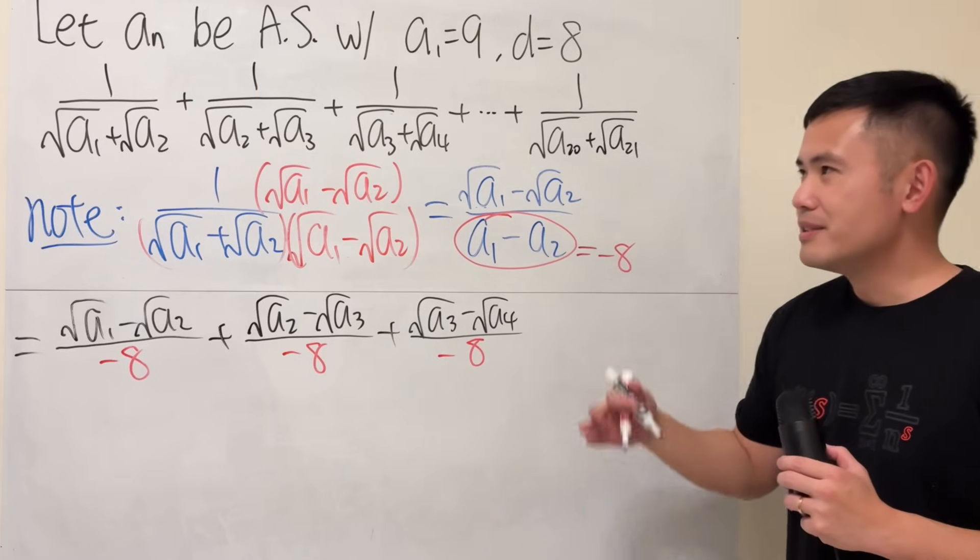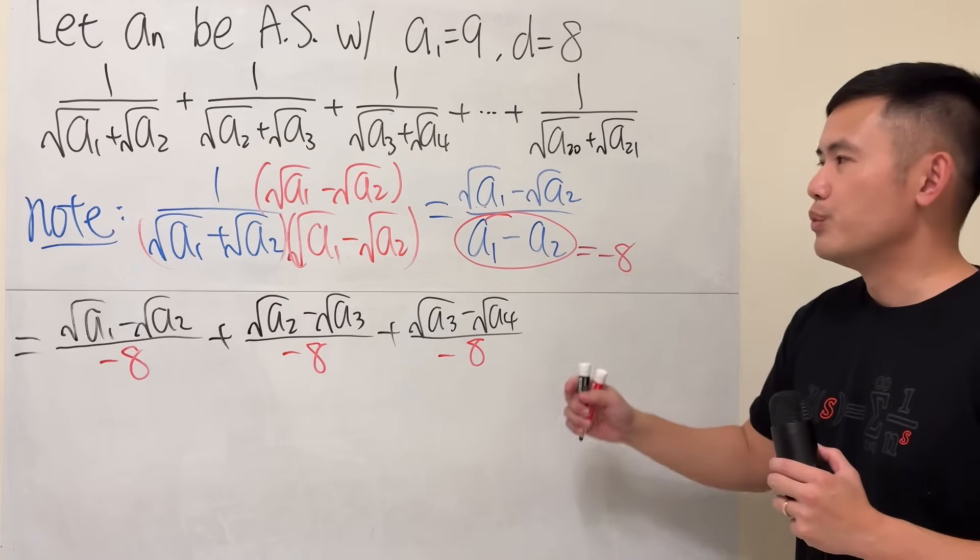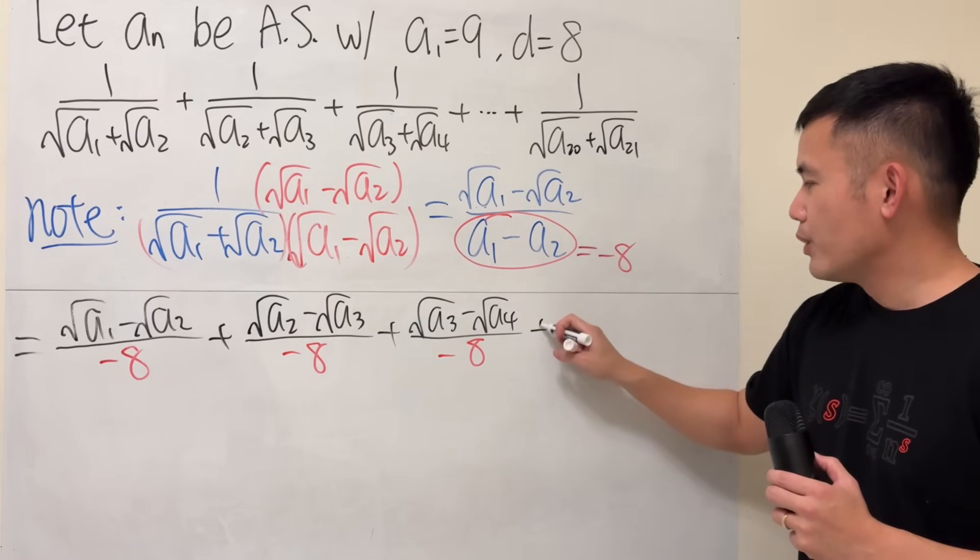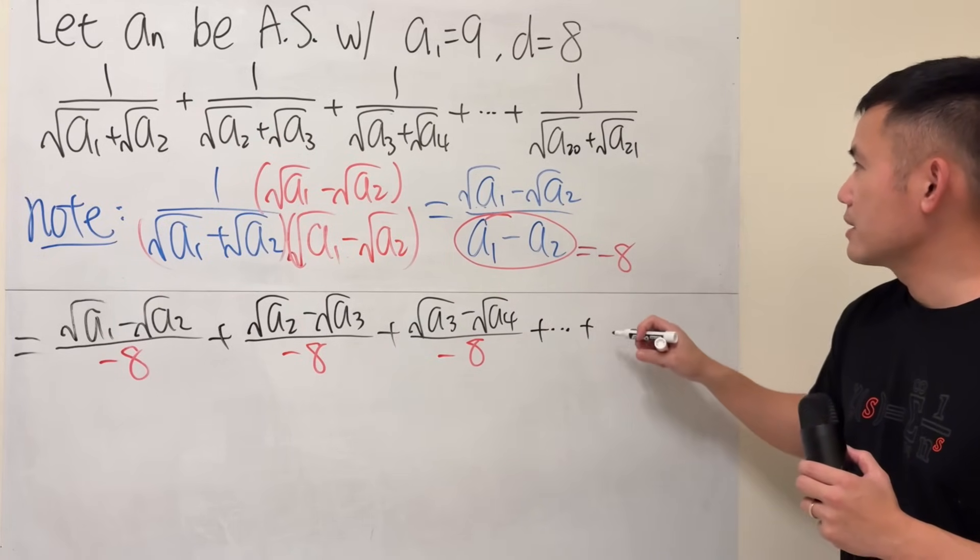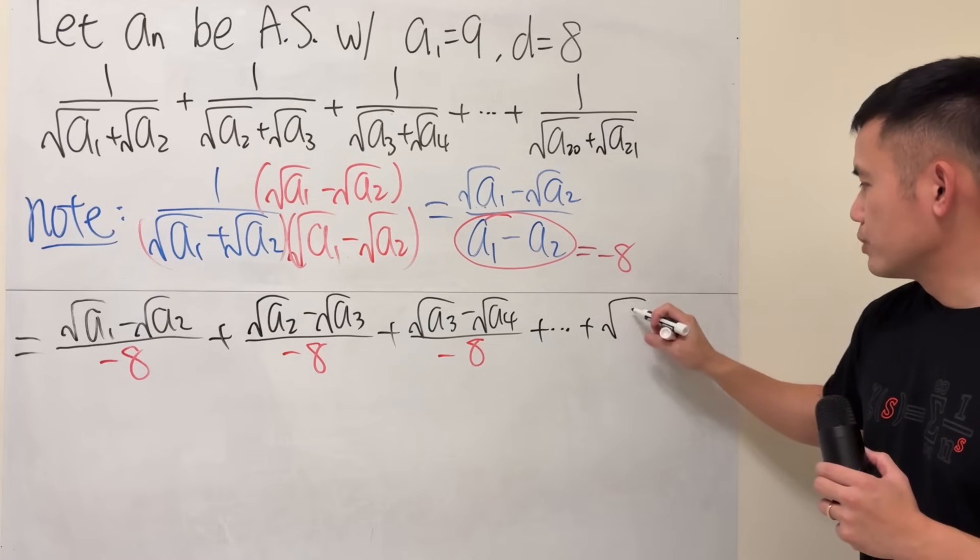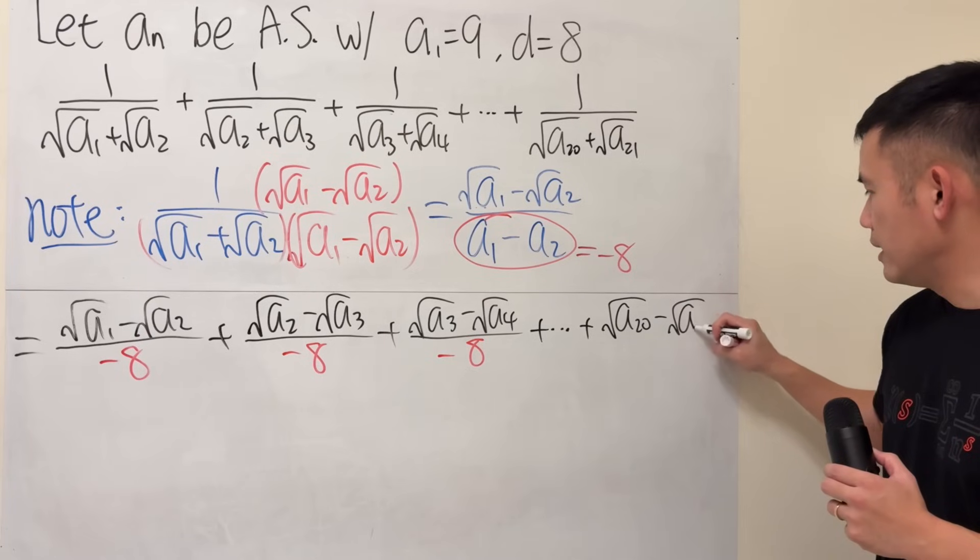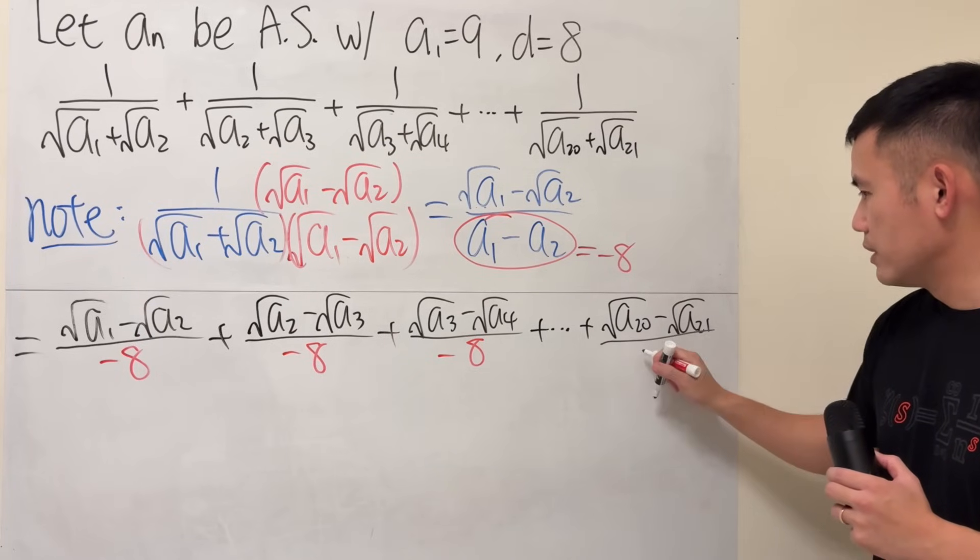So, this question is designed so that you will have to know this right here. You really have to understand what makes a sequence arithmetic. And the last one, square root of a20 minus square root of a21 over negative 8.